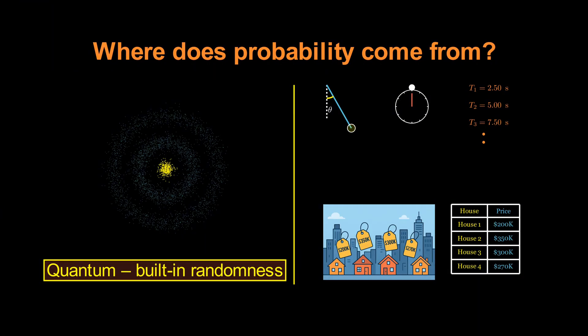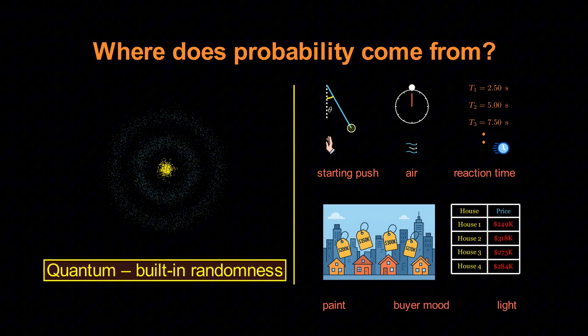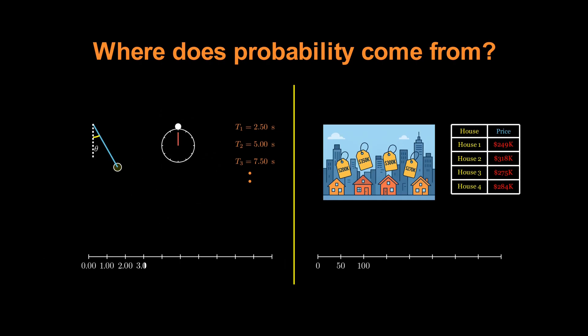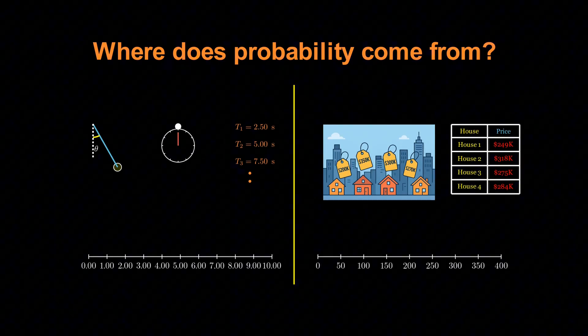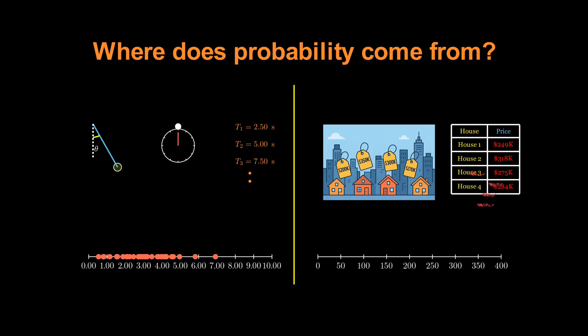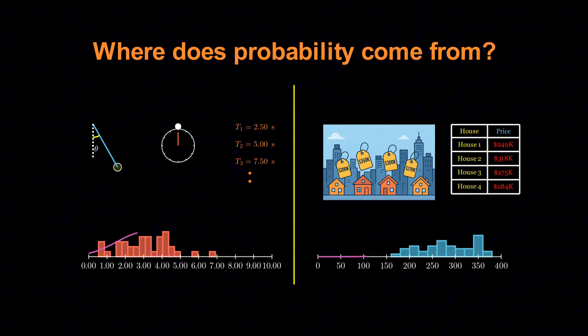There are small variations in how we start the pendulum, air currents in the room, our reaction time when hitting the stopwatch. For house prices, there are endless micro factors, paint color, the exact mood of the buyer, tiny structural details.